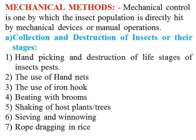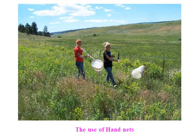The use of an iron hook for the removal of the rhinoceros beetle from coconut plants. Beating with brooms the branches of host trees to prevent feeding or aggregation of the locusts. Shaking the host plant trees is also very important during pest management of locusts. Sieving and winnowing is related to stored grain products to escape pest attack. Rope dragging in rice fields is used for the leaf-rolling caterpillar. These are particular mechanical methods followed for pest management.